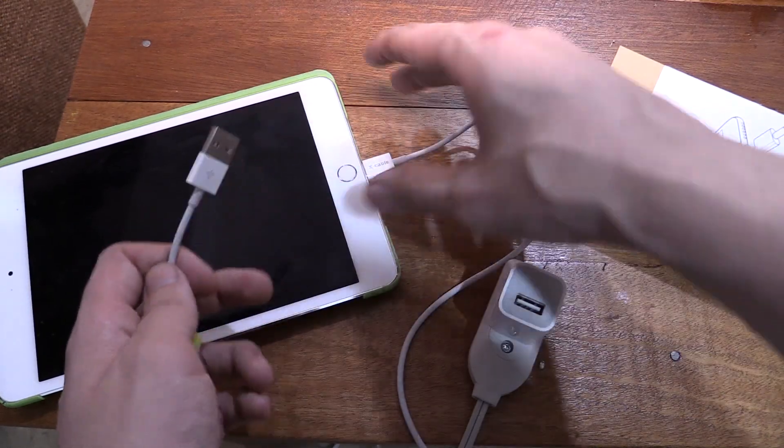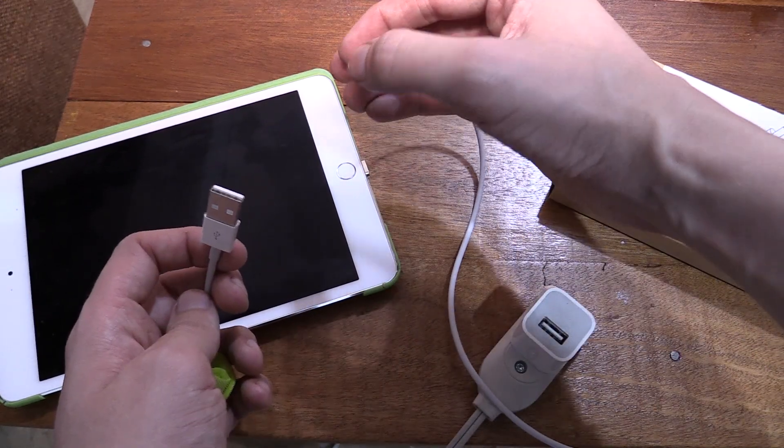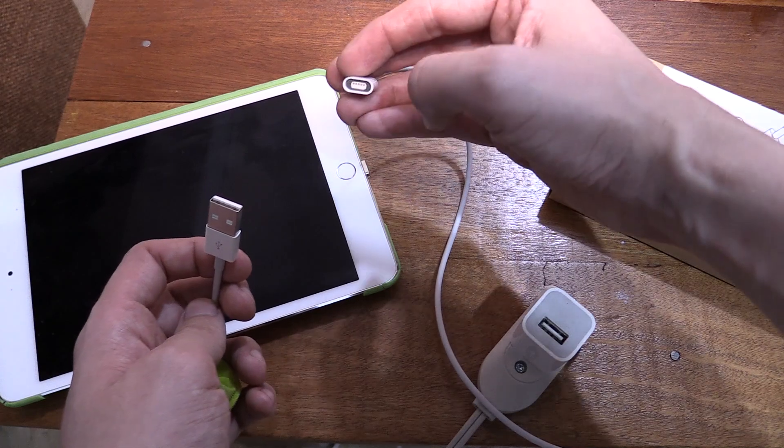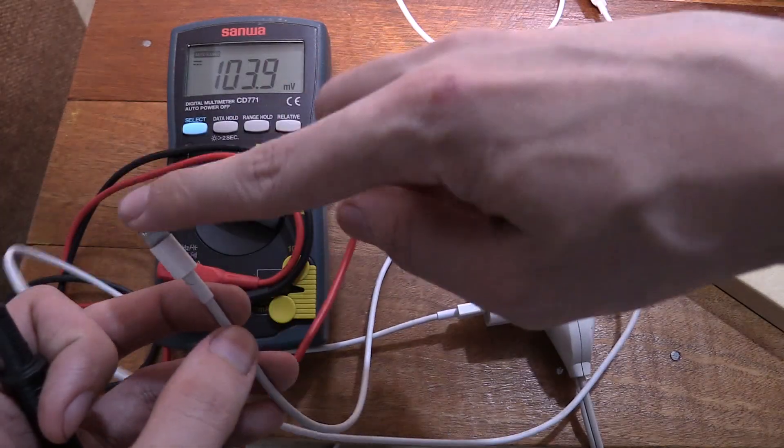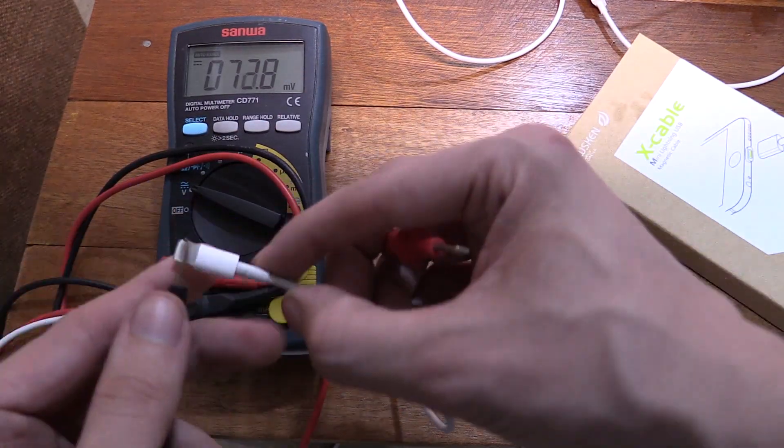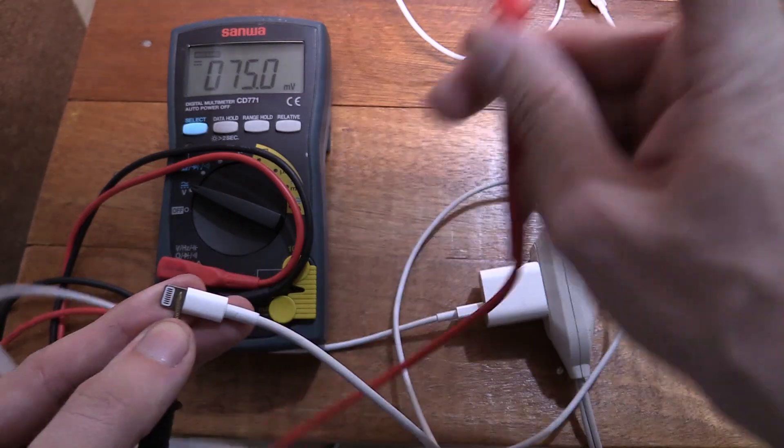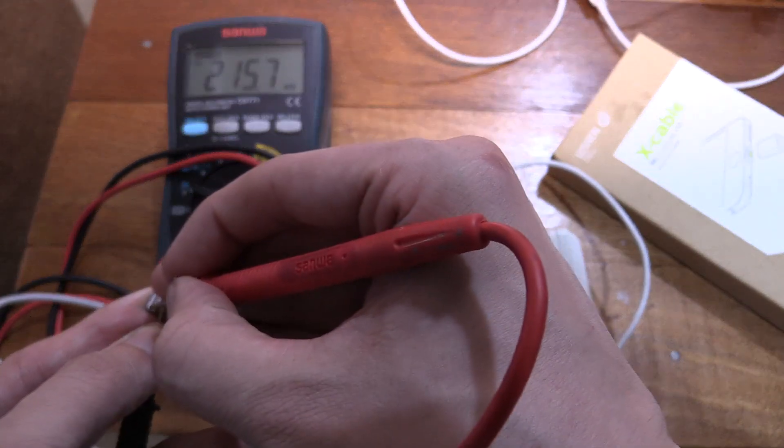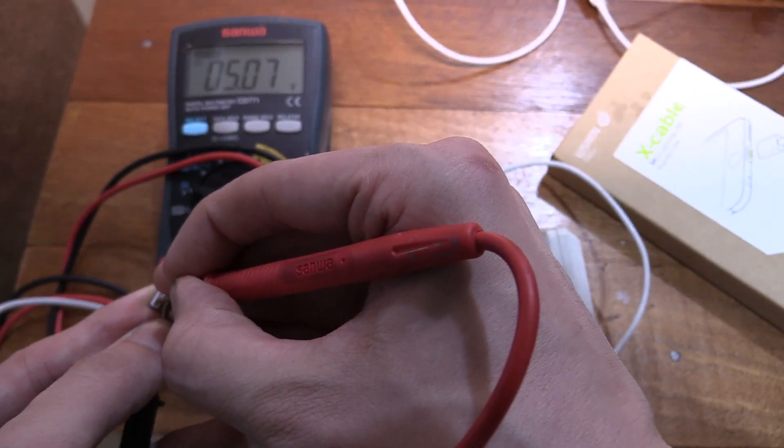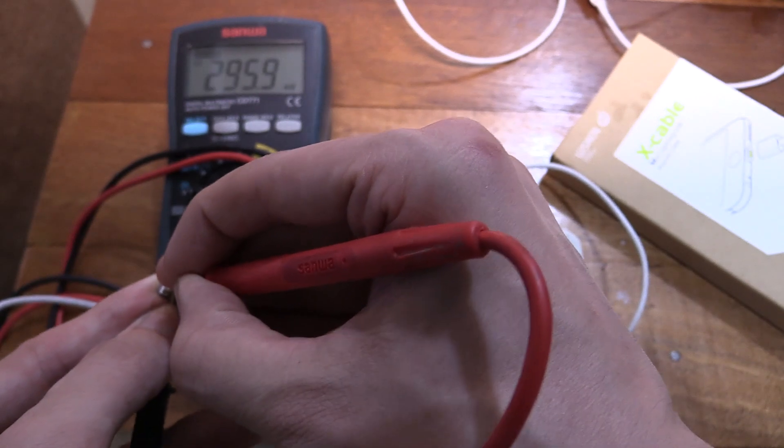So let's get a multimeter and just measure. Let's do the most basic measurement and see if we are actually at least getting 5 volts out of this. So as a control test, we're going to start with an official Apple cable. I'll connect my ground and then I'll probe for the power pin. There you go, 5.07 volts.